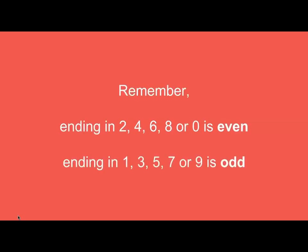However large the number is, you can always look at the ones digit to see if it is odd or even. So what about the number one million three hundred and fifty eight thousand four hundred and sixteen? Looking at the ones digit, it's a six. So that whole number is even. Remember, if it ends in two, four, six, eight or zero, it is even. If it ends in one, three, five, seven or nine, it is odd.